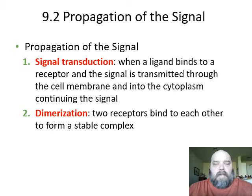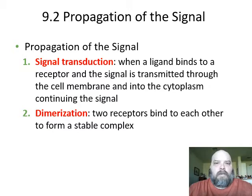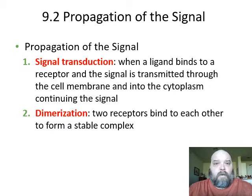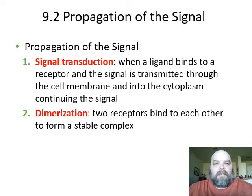The ligand binds the receptor. The binding of the ligand to the receptor will somehow change the tertiary structure of that integral protein that is the receptor — change the tertiary, change the quaternary. The changing of the quaternary structure changes the shape of the receptor, at least the portion of it that is touching the cytoplasm.